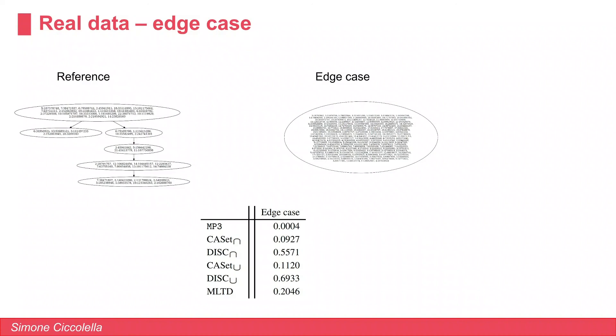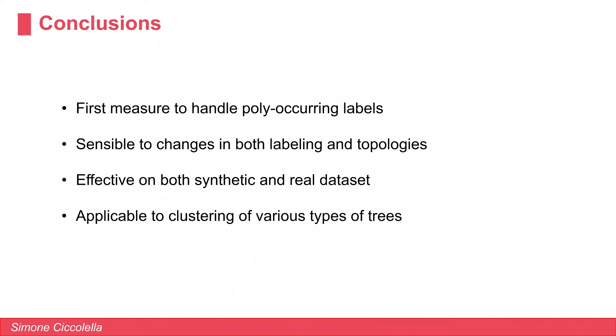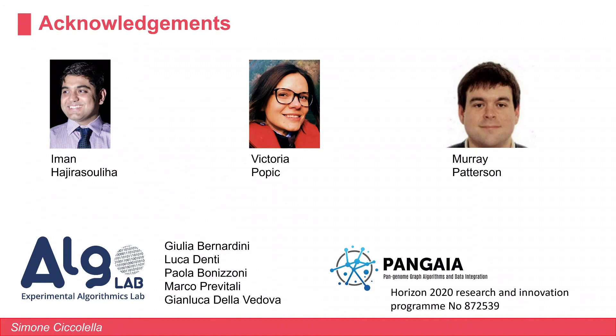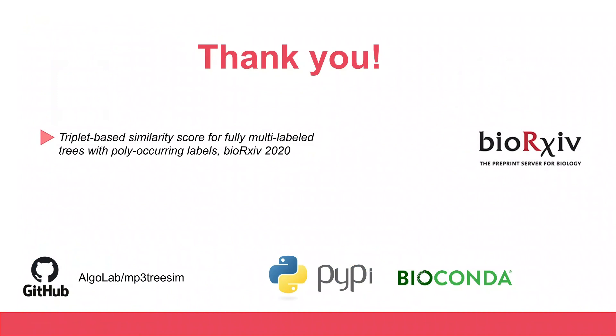In conclusion, MP3 is the first measure to handle polyoccurring labels. It is very sensitive to changes in both labeling and topologies. It is effective on both synthetic and real datasets and is applicable to clustering of various types of trees. I would like to acknowledge and thank Iman Azira Sula, Victoria Popich, and Marie Patterson for many illuminating discussions on cancer progression and phylogenies, and also thank my co-authors from AlgoLab and the Horizon 2020 research and innovation program which supported this work.